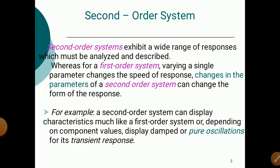What is a second order system? Second order systems exhibit a wide range of responses which must be analyzed and described. The second order system exhibits a wide range of responses means output varies continuously. Whereas for a first order system, varying a single parameter changes the speed of the response. Changes in the parameters of a second order system can change the form of the response. A second order system can display characteristics much like a first order system or, depending on component values, display damping or pure oscillations for its transient response.